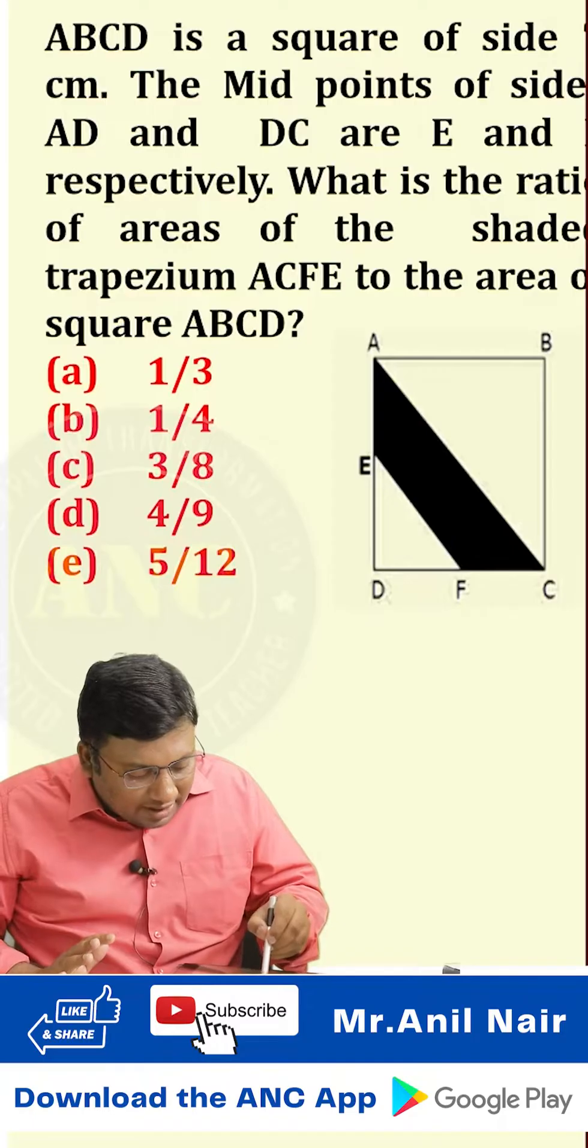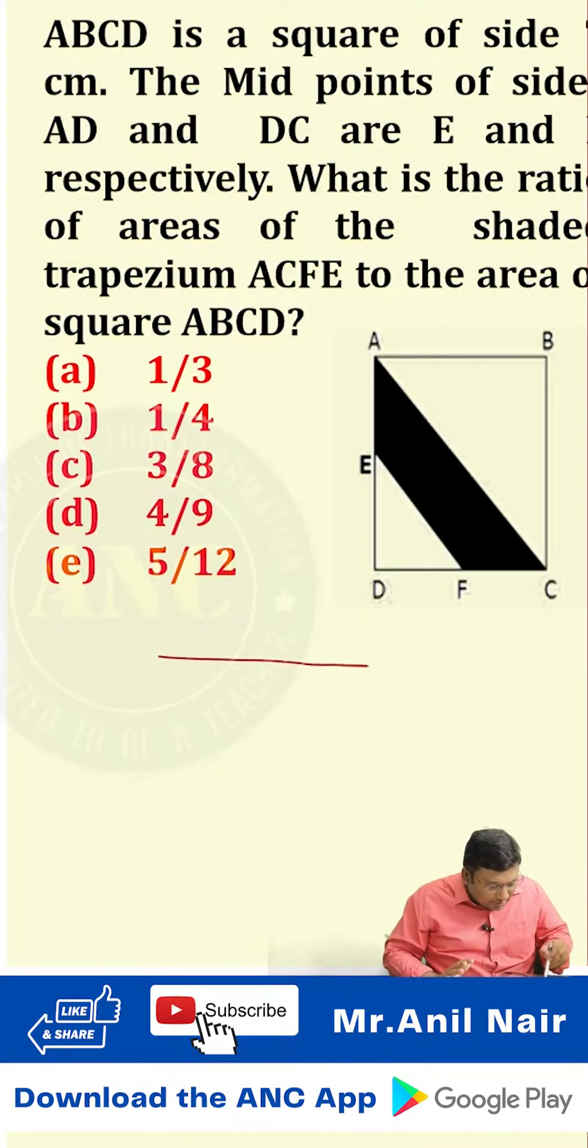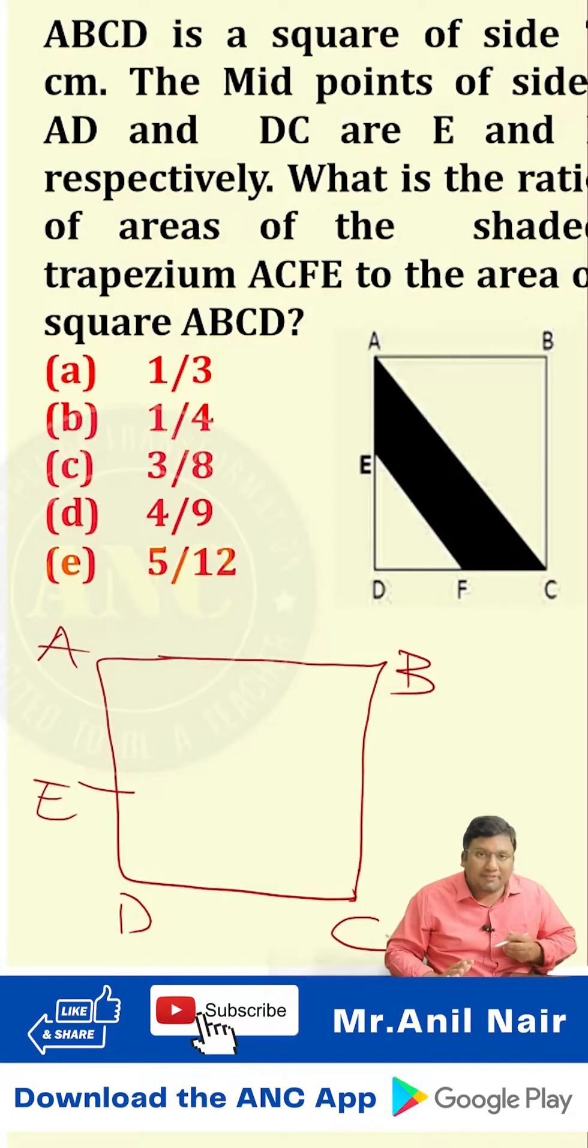There is a diagram that is given. ABCD is a square. He has taken the midpoints of AD which is E and the midpoint of DC which is F.